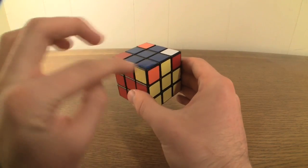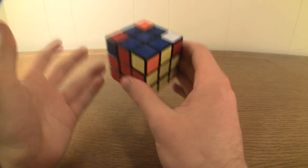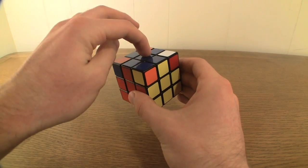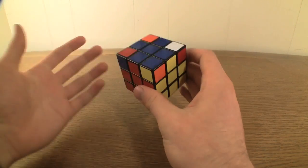This blue, orange, and yellow corner piece, however, is not in the correct location because it is in between the blue, yellow, and red sides.